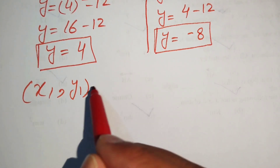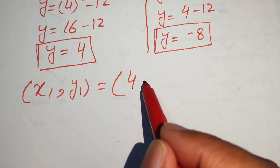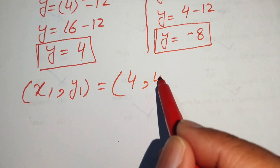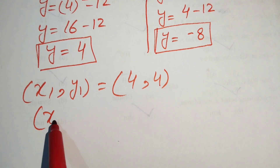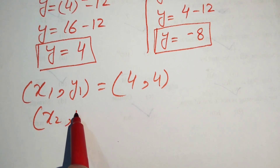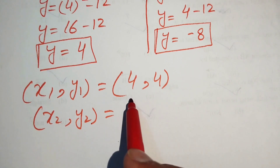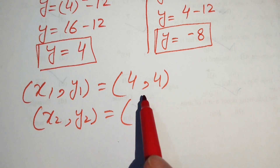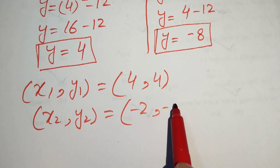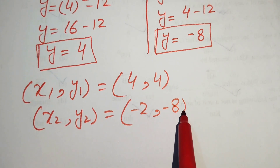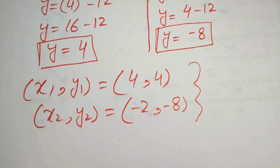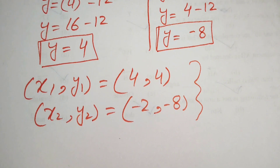So the two solutions are (x₁, y₁) equals (4, 4) and (x₂, y₂) equals (minus 2, minus 8). That is our final answer. Thank you for watching — please subscribe to the channel for more videos.